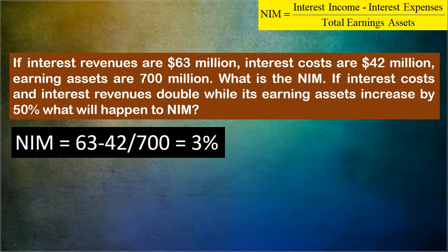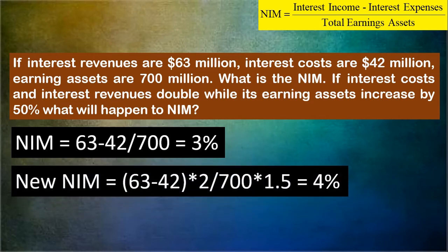Now let's do the second part. If interest costs and interest revenues double, we can simply double the revenues and double the expenses first and then get the difference. Or alternatively, we can first calculate the difference between revenue and cost and then multiply it by 2, because when revenues and expenses are doubled, the difference is also doubled. So revenues minus expenses, and the result is multiplied by 2.